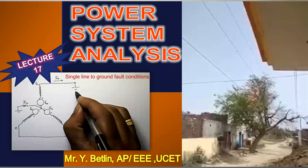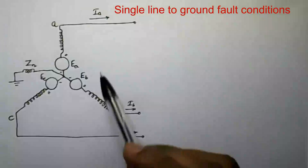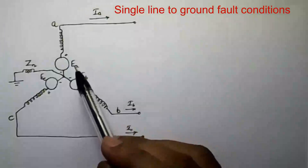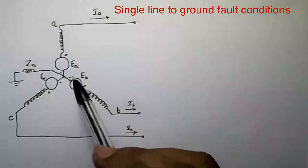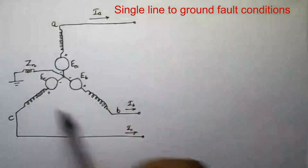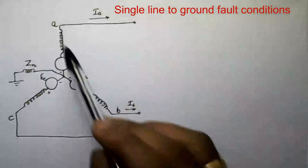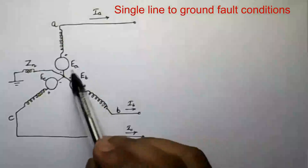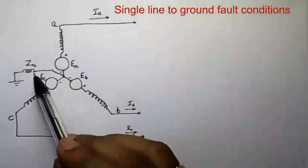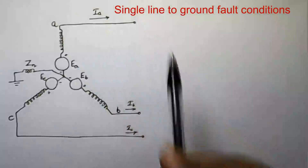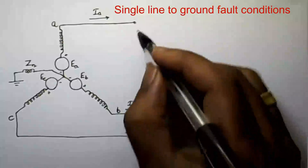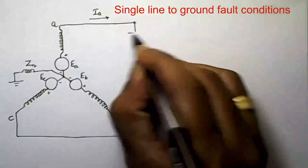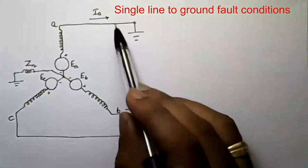In this video I am going to talk about single line to ground fault conditions derivation. This figure shows a three-phase alternator, also called a synchronous generator or AC generator. The circuit diagram shows three-phase windings marked as A, B, and C. The neutral is grounded through an impedance. Phase A current is Ia, phase B current is IB, and phase C current is IC. Assume that phase A is short-circuited with ground.